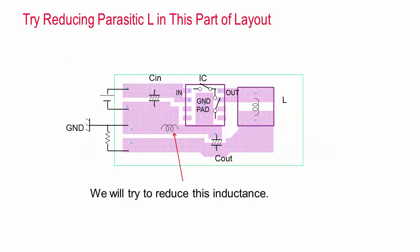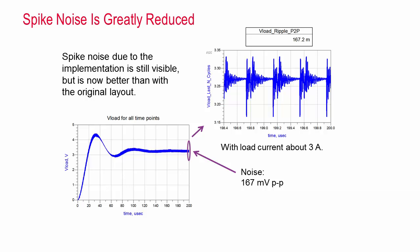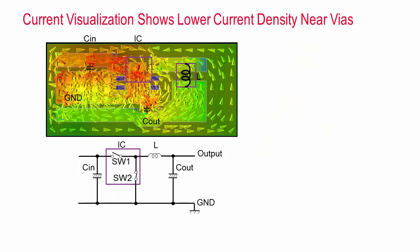We want to reduce the parasitic inductance between the output capacitance and ground. We can accomplish this by adding a ground plane and vias. Spike noise is greatly reduced, and where we have added the vias, we no longer see the high current density as before.